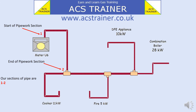We can now begin to calculate the pipe sizes. We do this by working the pipe work out in sections. We need to give a number to the beginning and end of each section. As can be seen, the start point at the meter we've called point one. The first tee we've called point two. Mark these on your sketch as pipe work one to two.